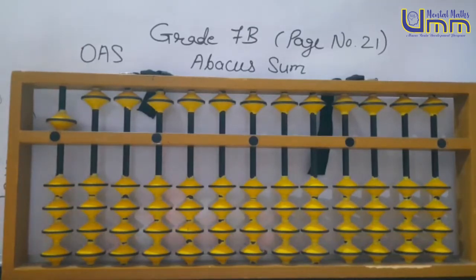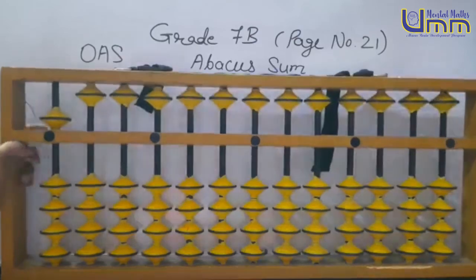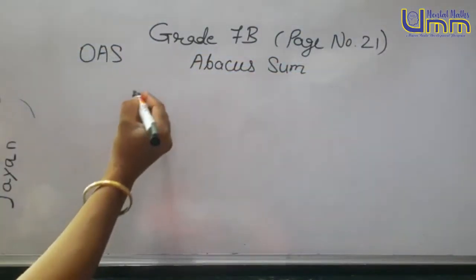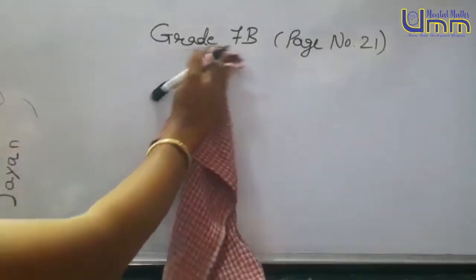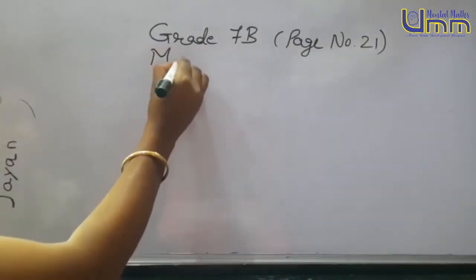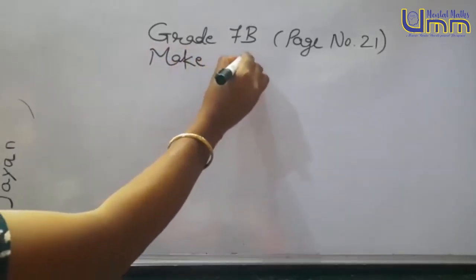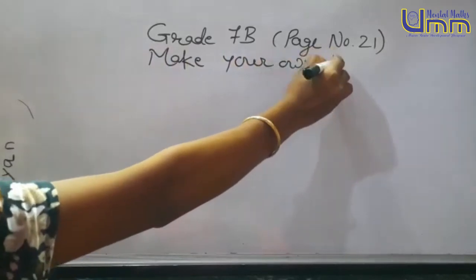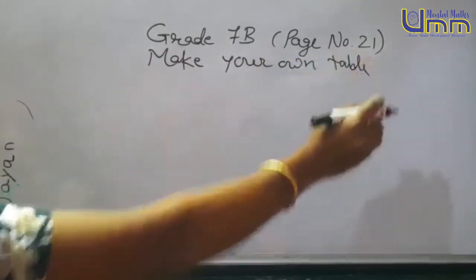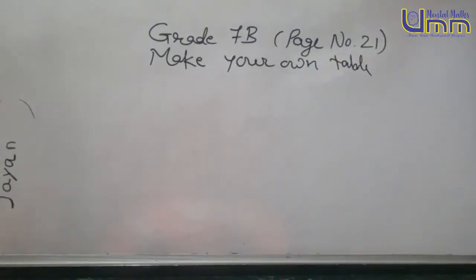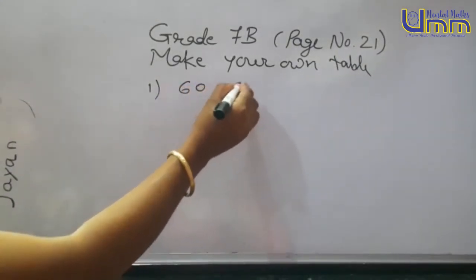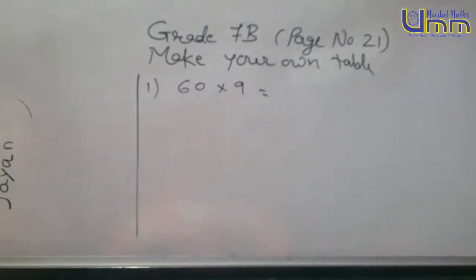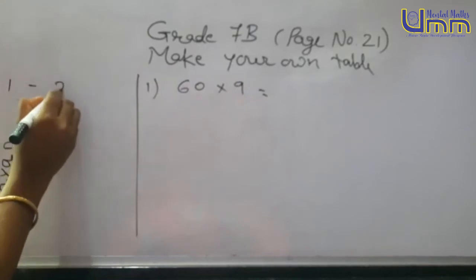Oral sums done. Chalo, ab hum make your own table karte hain. Usi ke side mein make your own table hai. Hum log 1-2-5 method se banate hain.